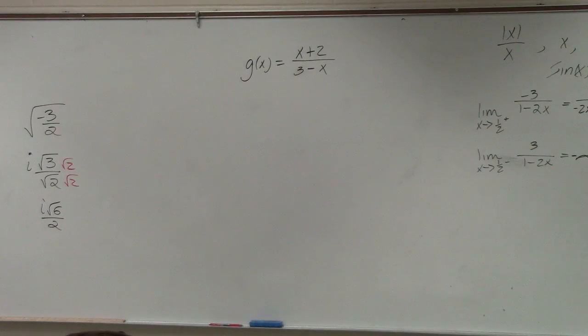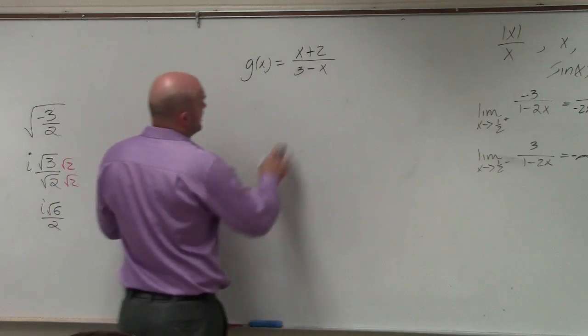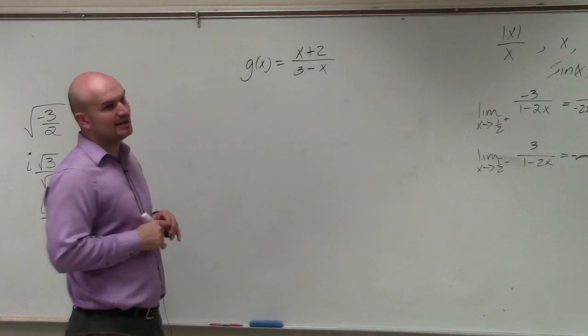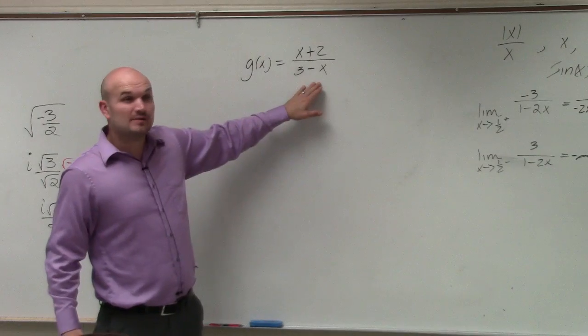This question is basically asking us to find the vertical and horizontal asymptotes. So again, in identifying the vertical asymptotes, basically what we want to do is find when our denominator is equal to zero.